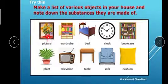Now see the picture. Which substance is used to make this picture? We use cardboard, paper, glue, and then water. Door, we use wood. Wall clock, we use plastic and glass. Bookcase, we use wood or iron. Plant uses soil. TV, we use plastic, glass, metal, etc. Table, we use wood. Sofa, we use fabric and cotton or wood or iron. Cushion, we use cotton.